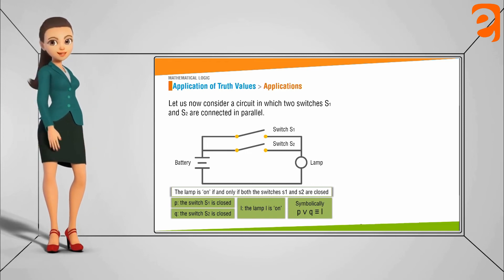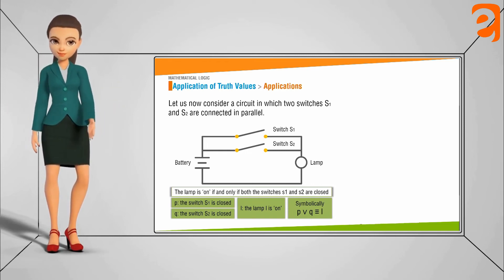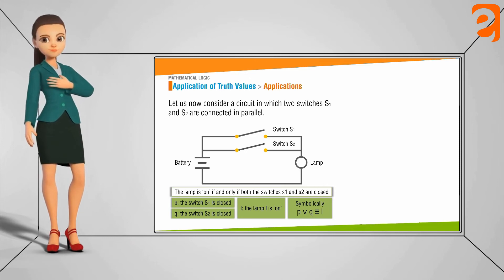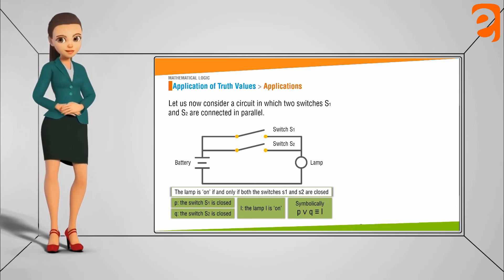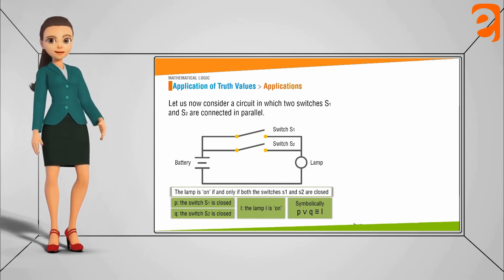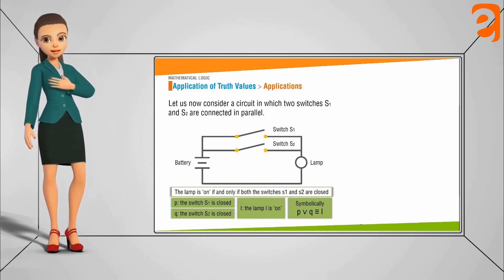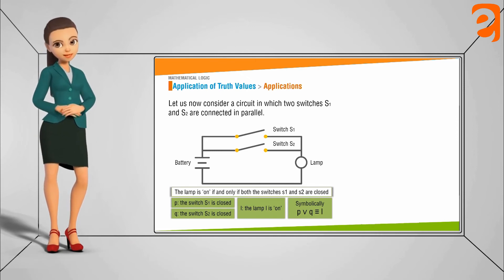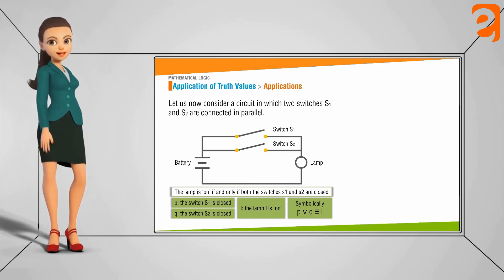So if P is the statement that S1 is closed, Q is the statement that S2 is closed, L is the statement that the lamp L is on, then the logically equivalent statement will be P or Q is logically equivalent to L. That is switch S1 is closed or the switch S2 is closed is logically equivalent to the statement that the lamp L is on.